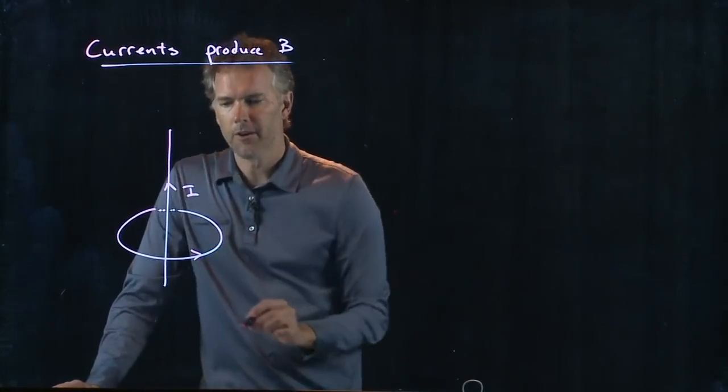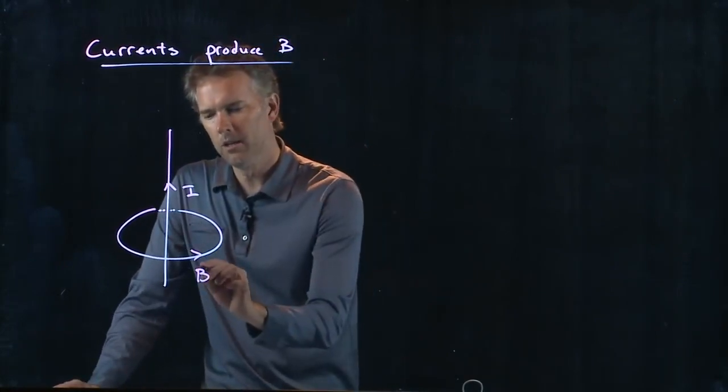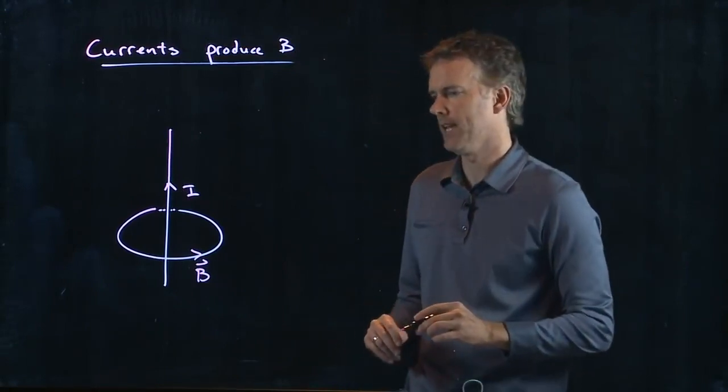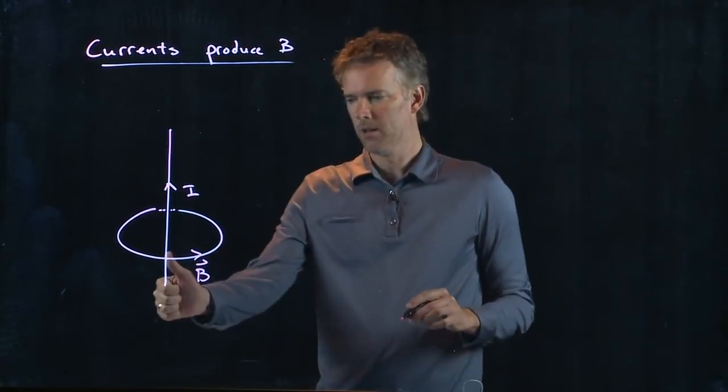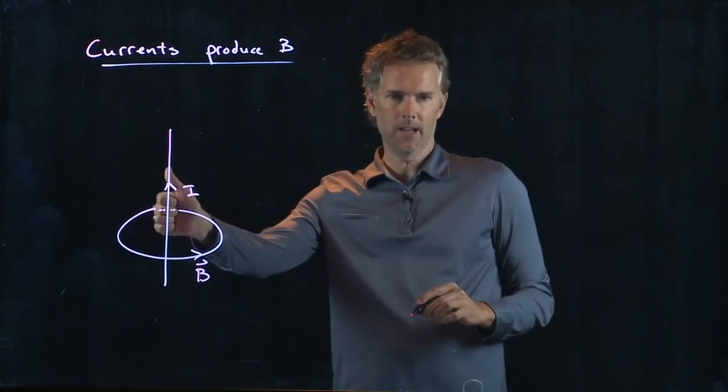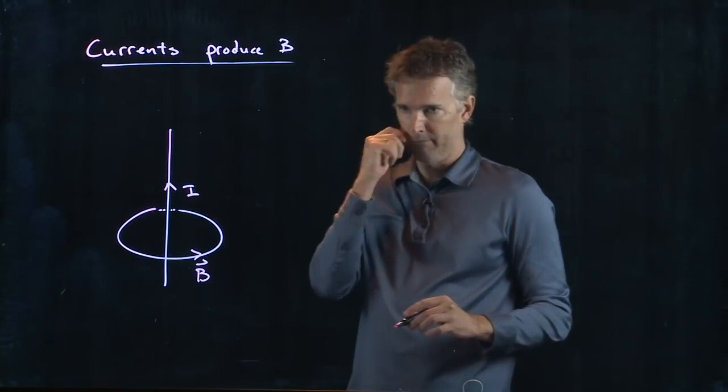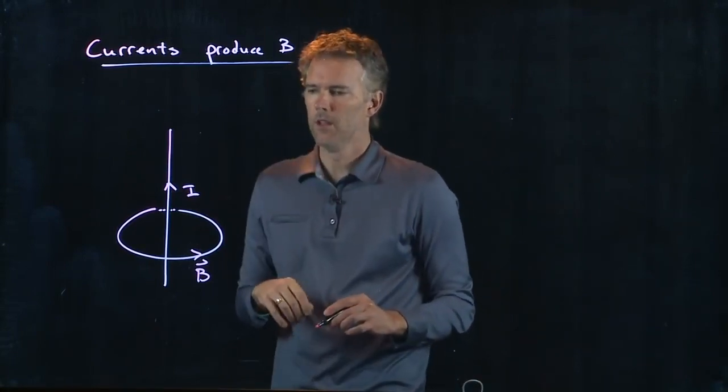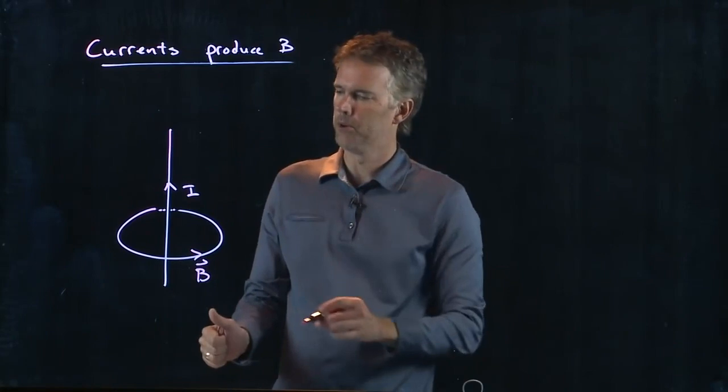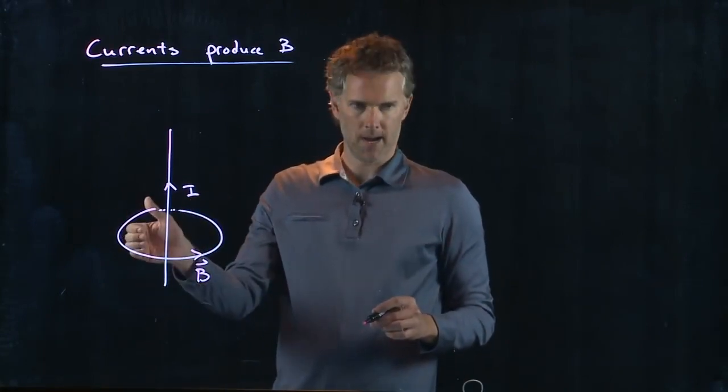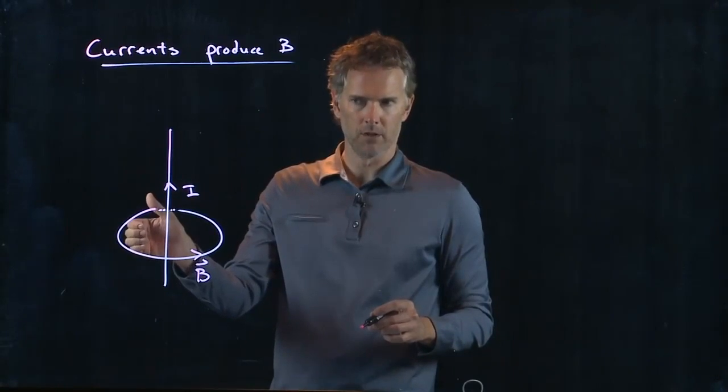We can figure out the direction of B based on the right-hand rule. If you take your thumb and put it in the direction of I, then your fingers wrap around in the direction of B. Look at the computer monitor, put your thumb in the direction of I, wrap your fingers around, that should be the direction of B.